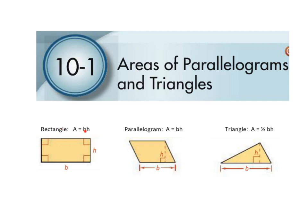The area of a rectangle is base times height. The area of a parallelogram is also base times height, but the height always has to be the perpendicular height — not the leg on the side of the parallelogram. A triangle is one-half base times height, and again, height is always the perpendicular distance.